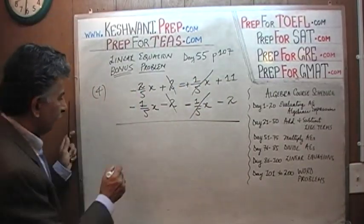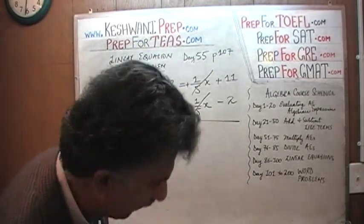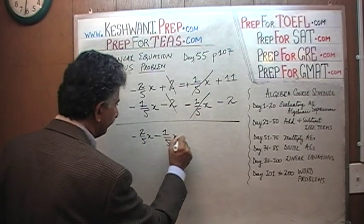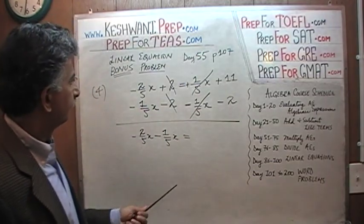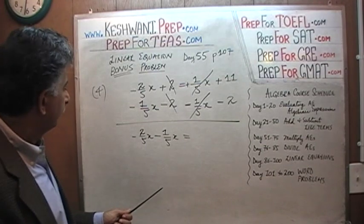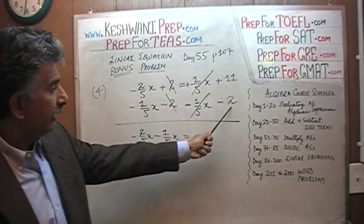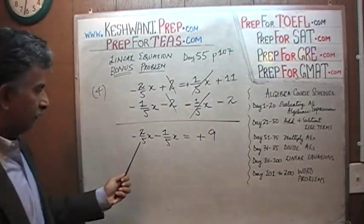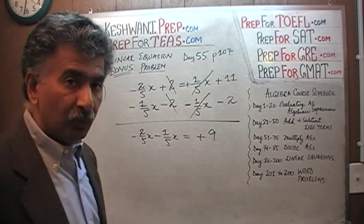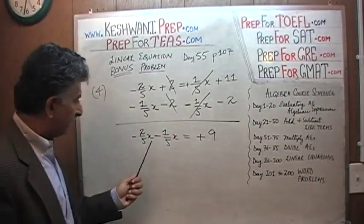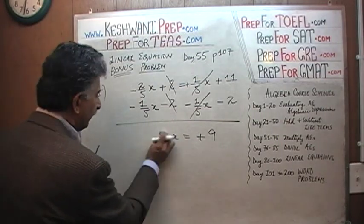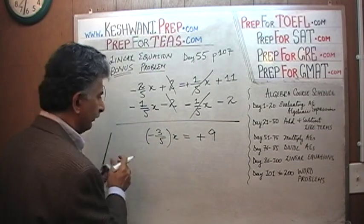And we are left with negative 2 fifths x and negative 1 fifth x. And on this side, we have positive 11 and negative 2. Positive 11 and negative 2 is going to give us positive 9. And how much do you suppose 2 fifths and 1 fifth is? Two fifths plus 1 fifth, because they have the same denominator, we can just add the top. Two fifths and 1 fifth should be 3 fifths. So I'm going to rewrite this. Instead of writing them as two separate terms, we're going to combine them together because they are like terms. Negative 2 fifths and negative 1 fifth should be negative 3 fifths. So it is negative 3 fifths x.